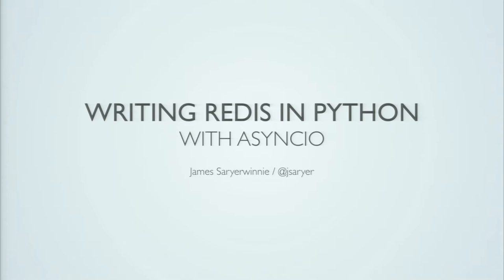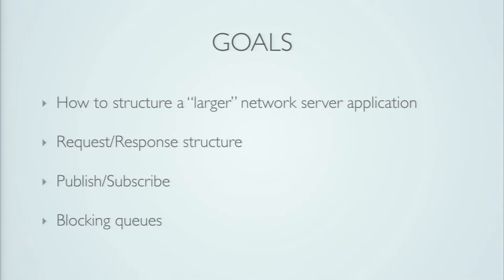The reason I want to share this today is because I think there's some useful things that everyone here can take away from it. I want to show how you can structure a larger network server application — that wasn't very obvious to me from reading the Async IO documentation. And then I want to show you a couple of patterns that happen in Redis that I think apply in general to various types of network servers. So the basic request response structure, how that looks like.